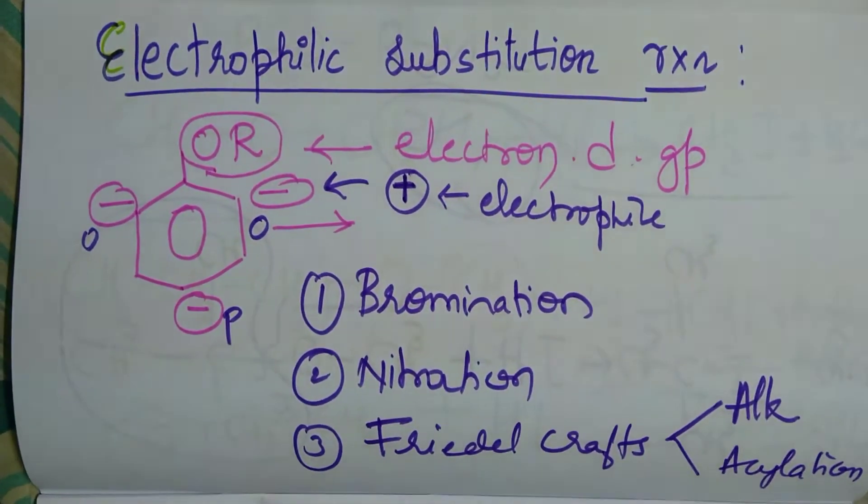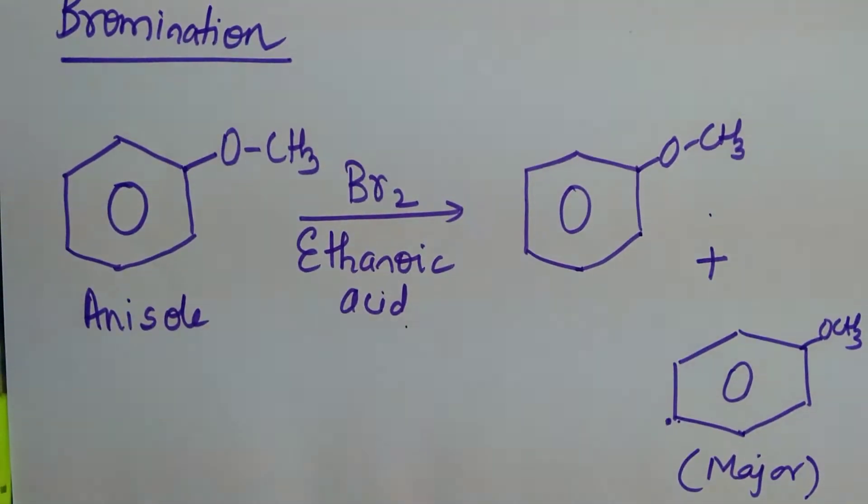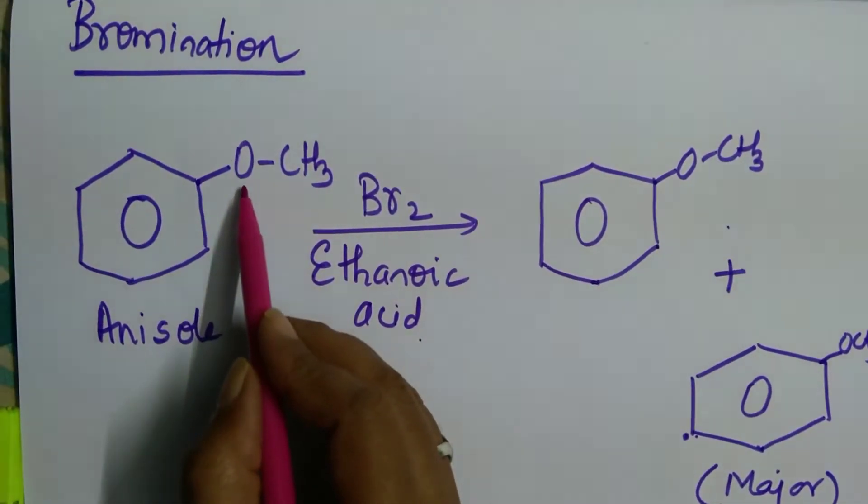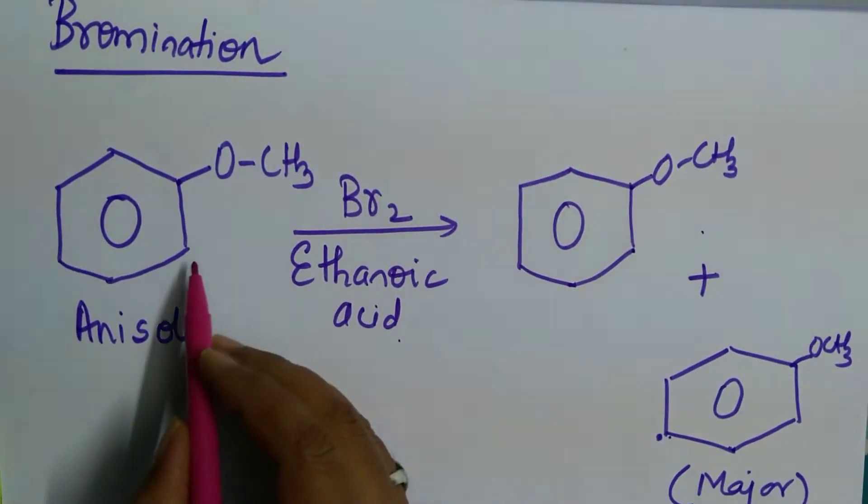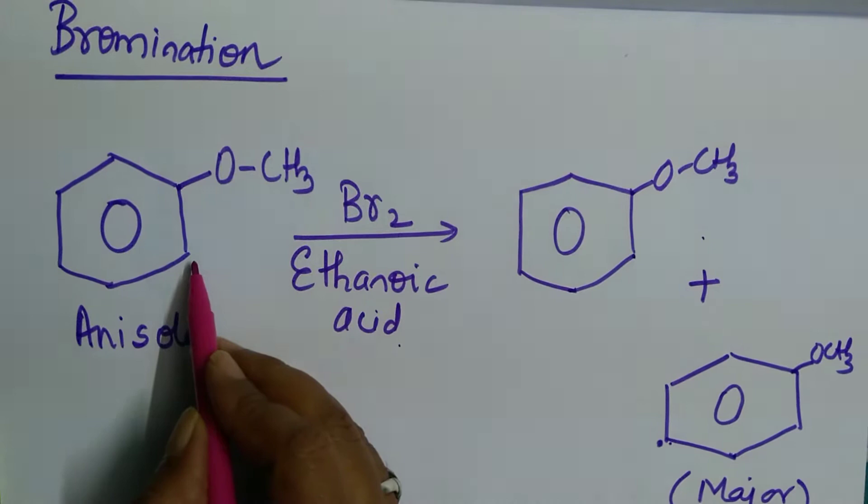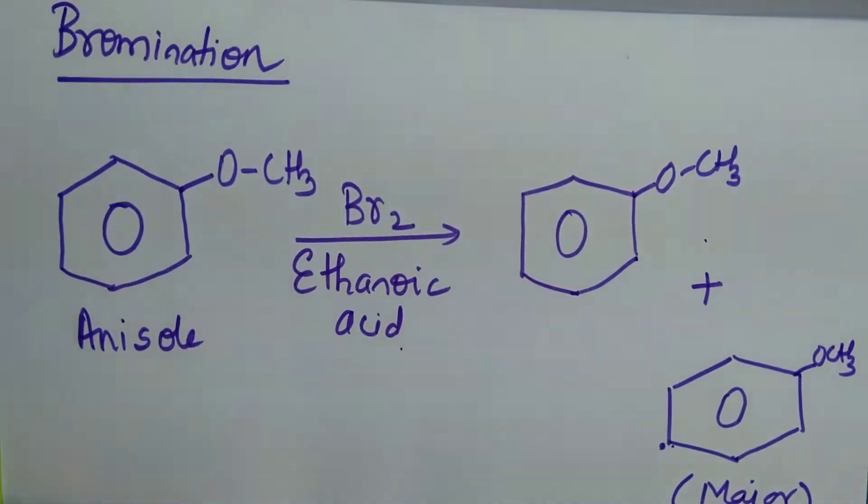We shall look into them one by one. Look into bromination. I have already said this is an electron donating group. Therefore, there is development of negative charge at ortho and para positions. So what is ortho position?